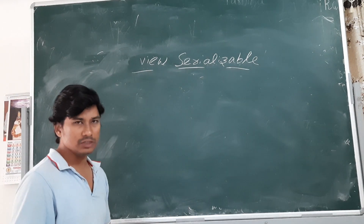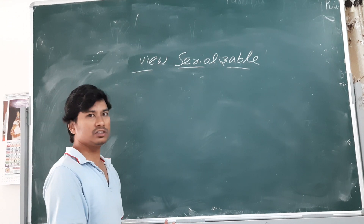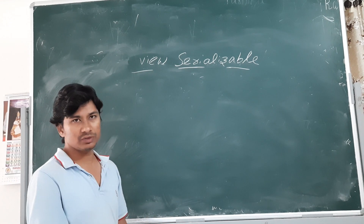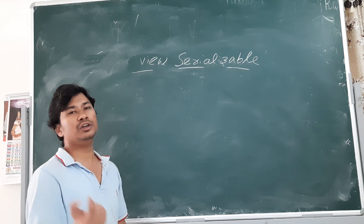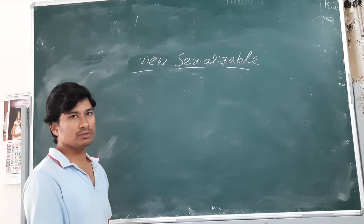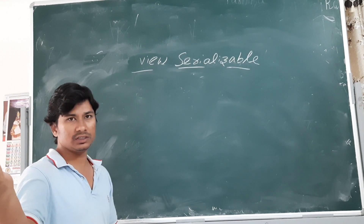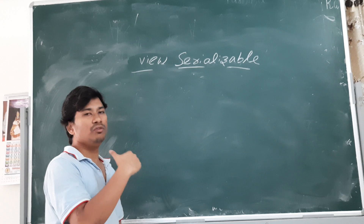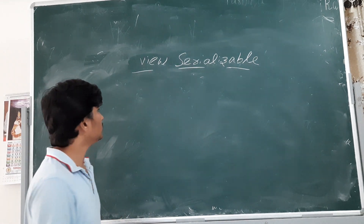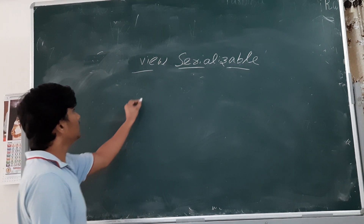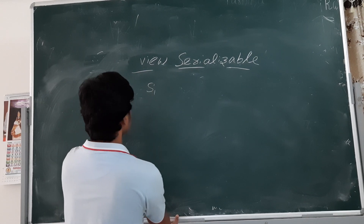Similarly, a non-serial schedule is view serializable if it is view equivalent to any of its serial schedules. It is the same as conflict serializability — there it should be conflict equivalent to any serial schedule, here it should be view equivalent to any of its serial schedules. Let me give an example.